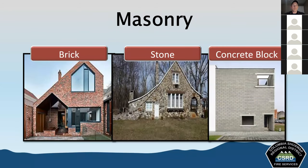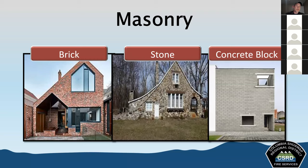Next is masonry, which includes brick, stone, and concrete block. Masonry is inherently fire resistive and a poor conductor of electricity, but it can act as a heat reservoir, sucking in heat and releasing it back into the building. With prolonged exposure to fire, masonry can also collapse. Brick and stone are used to create veneer walls in some cases — they're not load-bearing; they're on the exterior more for appearance.